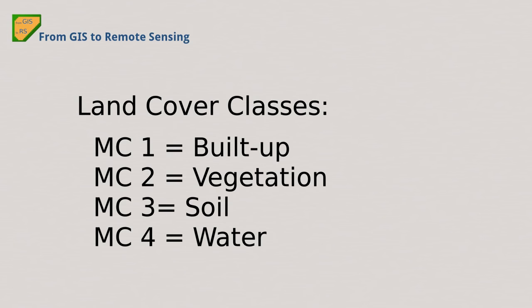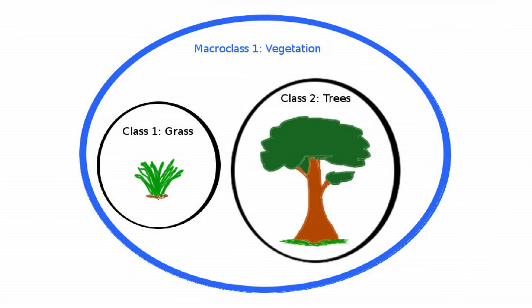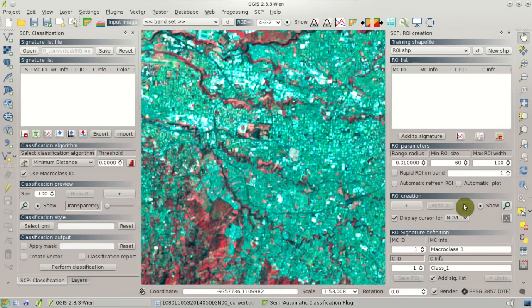We are going to create a classification identifying these land cover classes: built-up, vegetation, soil, and water, with a macro class from 1 to 4. A macro class like vegetation is a set of classes like grass or trees, which is used in the plugin for automatically classifying pixels in the image using the macro class code. This is convenient for classifying different features that belong to a macro class.